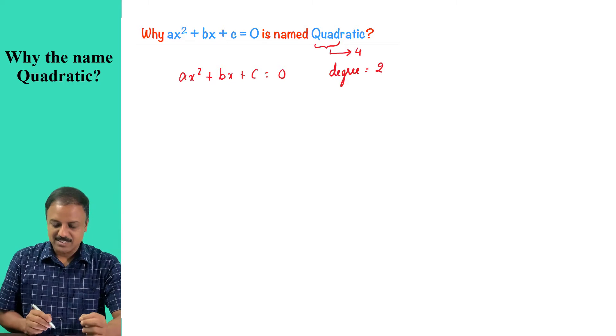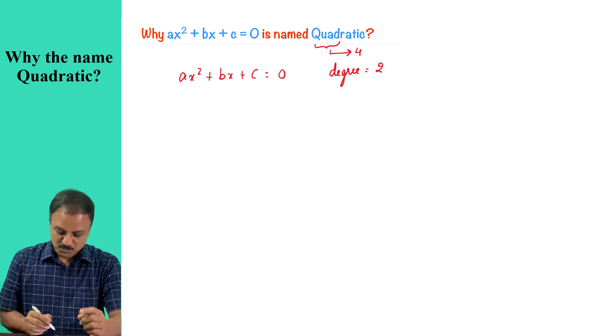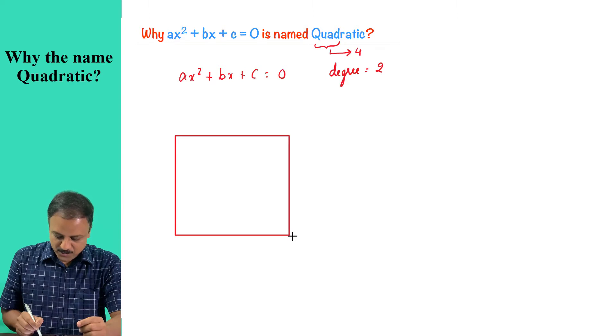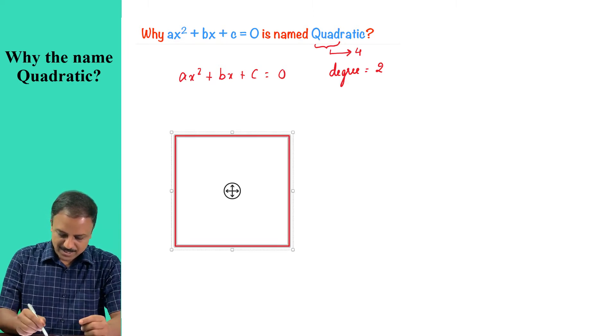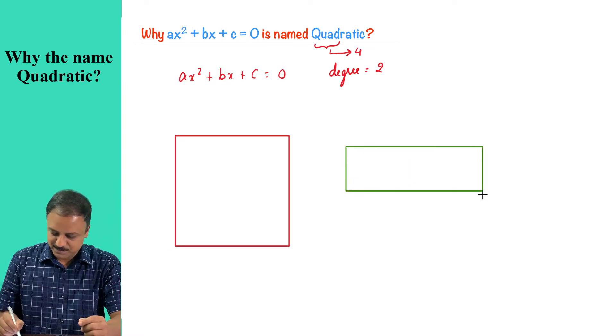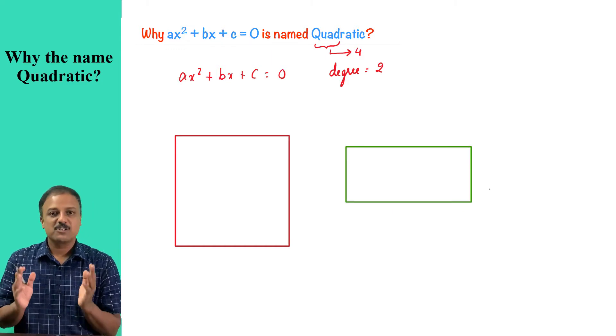When we talk about quadrilaterals, there are two special quadrilaterals. One is a square. You know square is a quadrilateral. And then the other one is a rectangle. These two are quadrilaterals.